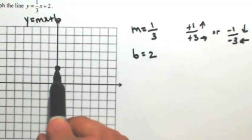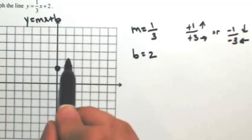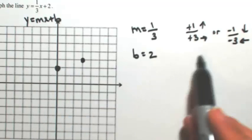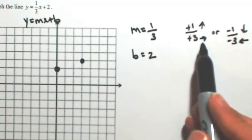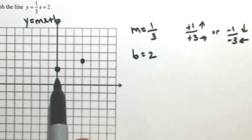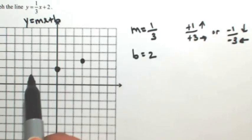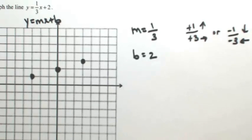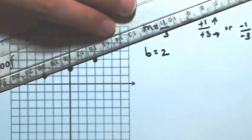From the point zero two, I'm going to go up one and right three, or maybe I went the other way. So from zero two, let me go down one and left three. If you've done it right, your points should match up and you should form a line.